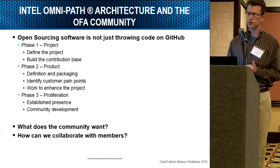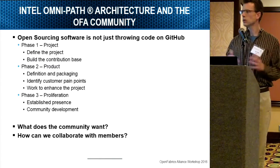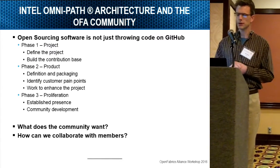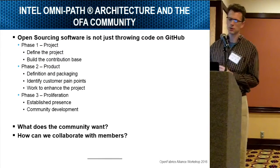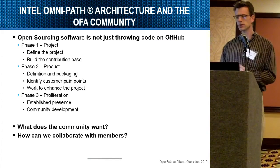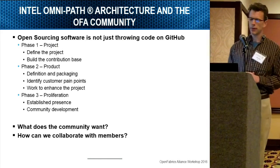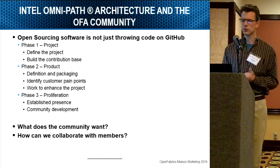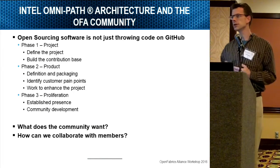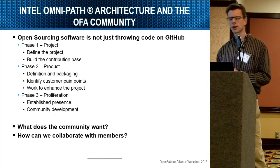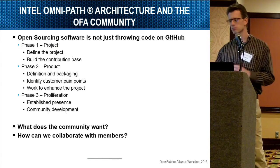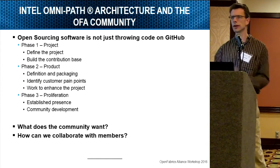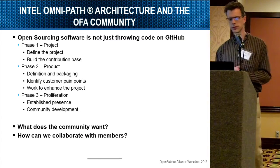The first phase is to define the project, get your code working, host it somewhere. The second phase is to figure out how you're going to package this and deliver it to customers, then start working with the customers to see what they want, how they want to change it, and make sure these people are able to use the code. The third phase is what I'm calling proliferation — the community is formed, everyone's using your code, and they start contributing back. It's a sharing ecosystem where everyone works together.